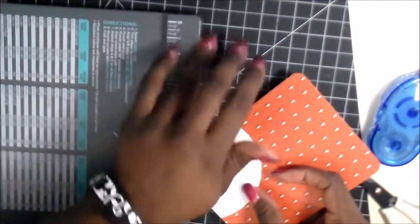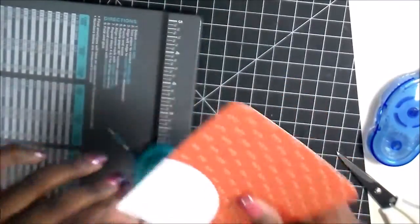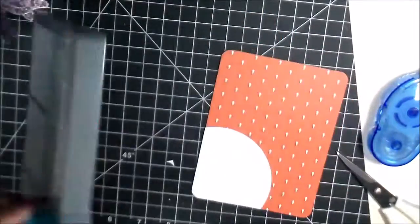So now that we have, this is the base, this is like the card is basically done. We're just going to corner edge, round that bottom edge there. So that way all four edges are the same.